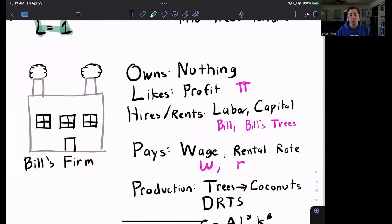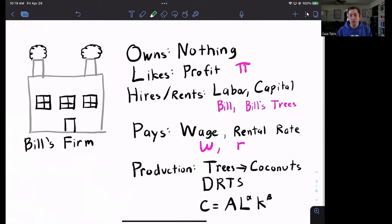Let's talk about Bill's firm. Even though Bill's firm is owned by Bill, we're going to pretend that when Bill walks into the factory, he puts on a different hat. He puts on his firm boss hat, which means that now he's not thinking about utility maximization. He's only thinking about profit maximization when he's working for his own firm. We know that Bill's firm likes profit because we assume that firms are profit maximizing. How are they going to make stuff? They need to have labor and capital where the labor is Bill, and the capital is Bill's coconut trees. That's what they're going to hire slash rent. What is the firm going to pay for those inputs? It's going to pay a wage W for Bill's labor, and it's going to pay a rental rate R to be able to pick or use the coconut trees that Bill is letting the firm use.